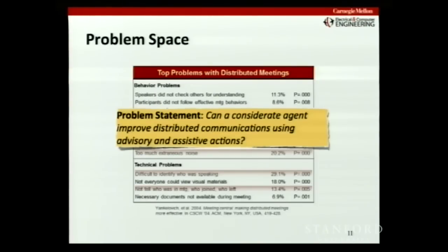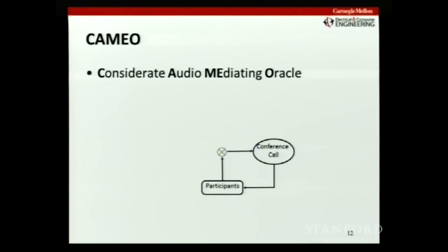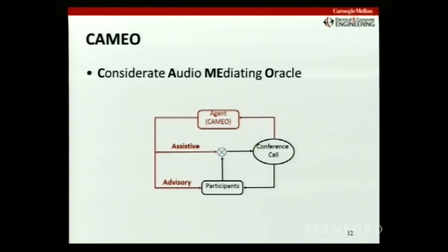This brings us to our problem statement: can we use a considerate agent to improve distributed communications using advisory and assistive actions? From a cybernetics perspective: you have the conference call with participants talking, and we want to add an agent — Cameo, Considered Audio Mediating Oracle. We give Cameo two actions: assistive, when it's directly influencing the channel by muting somebody or putting reverb on the channel; and advisory, when it's saying something to the participants — giving advice and hoping participants effect some change.